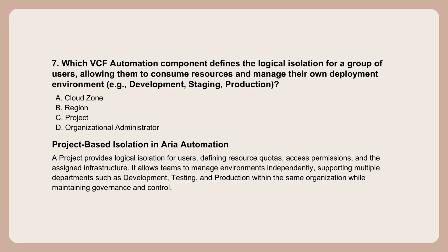Let's move up the stack to the service delivery layer — Aria Automation, specifically governance and provisioning. This is where organizations define the rules for how end users interact with the infrastructure. We need to separate user groups: the dev team needs its own space, strictly separate from the staging team space. The core unit of logical segmentation and resource containment in Aria Automation is the project. A project is the fundamental container where you define which users or groups have access, set overall resource quotas, and wall off their environment from other projects within the larger organization.